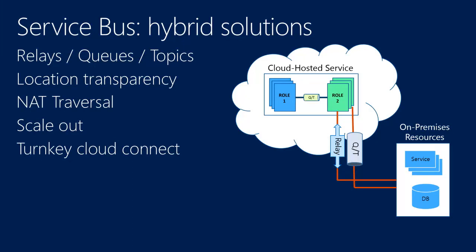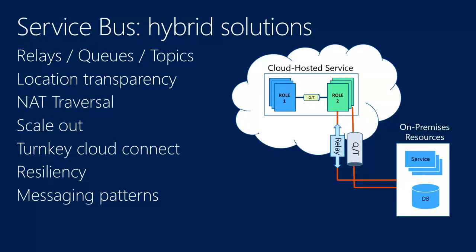With relay, you get turnkey cloud connect. You have a service running on your premise, and someone somewhere needs to connect to it. With relay, all you do is change configuration on your WCF services, and you have a cloud endpoint where someone can connect — no VPN needed, and you can manage security on that endpoint. Resiliency supports load balancing, meaning you can have multiple services or instances of the same service connected to a single address. Messaging patterns like pub-sub and department or customer-based addressing are also available.